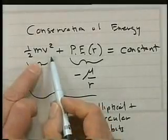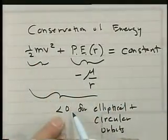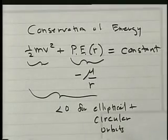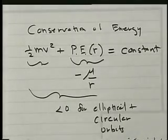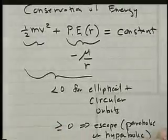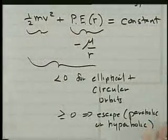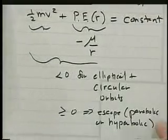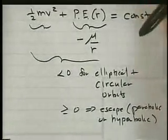When the velocity is high enough, such that this is greater than zero, you are in escape. So greater than or equal to zero for the total energy implies escape. And it could be a parabolic or hyperbolic orbit. And so just simply knowing whether your total energy is greater than or less than zero, you know whether you are in a capture orbit about the planet.